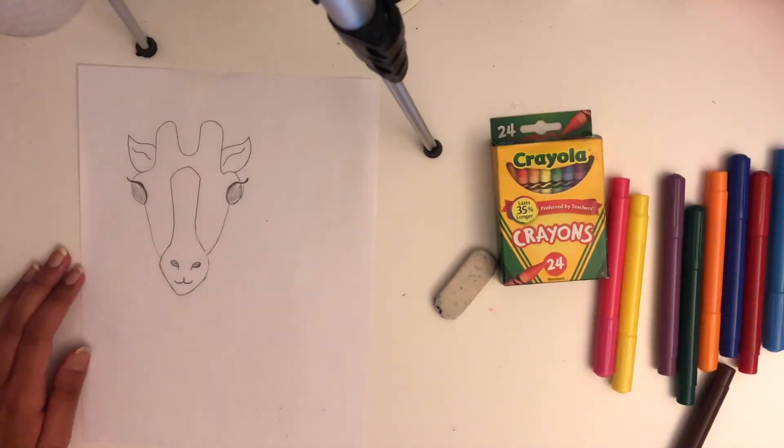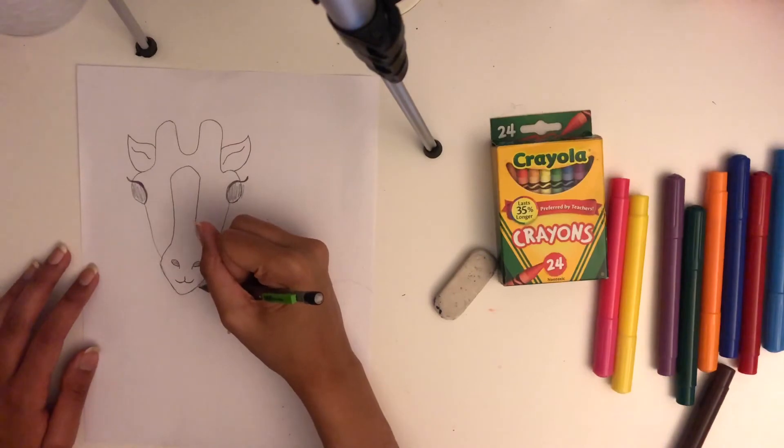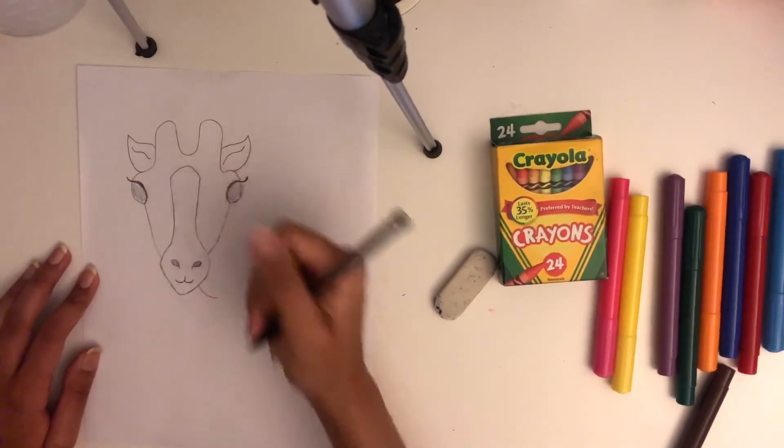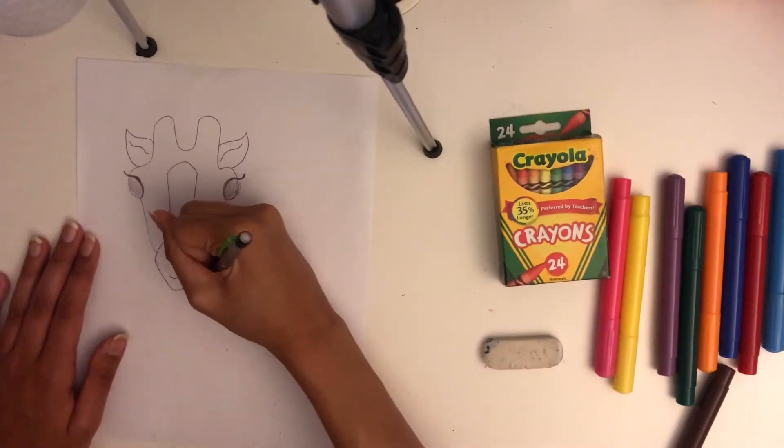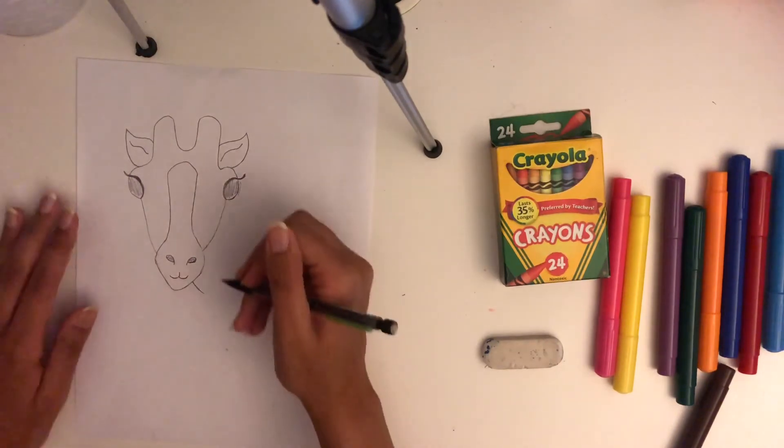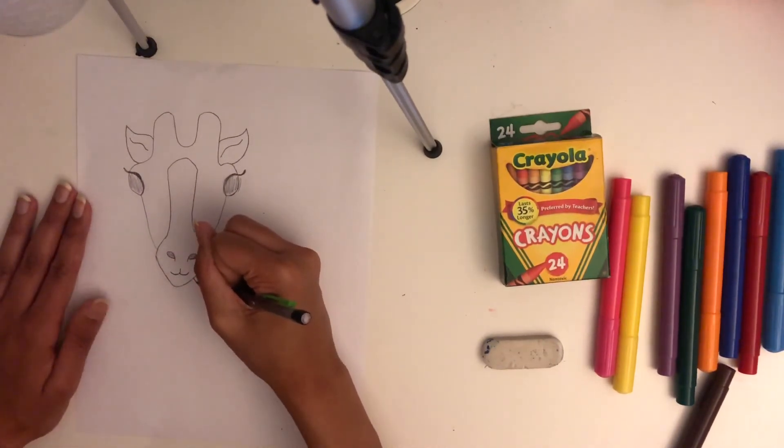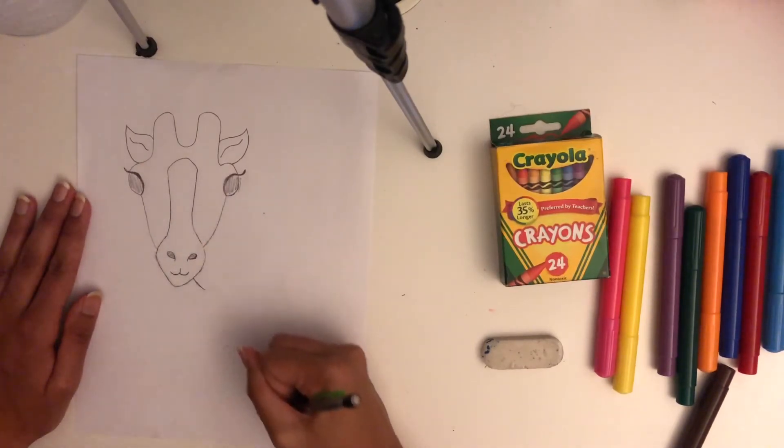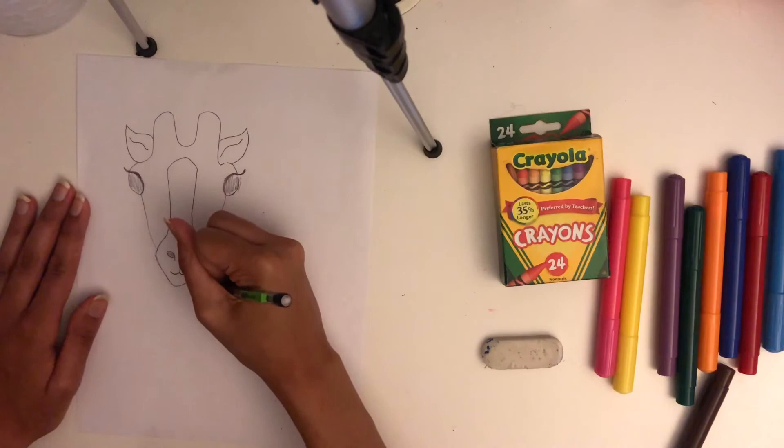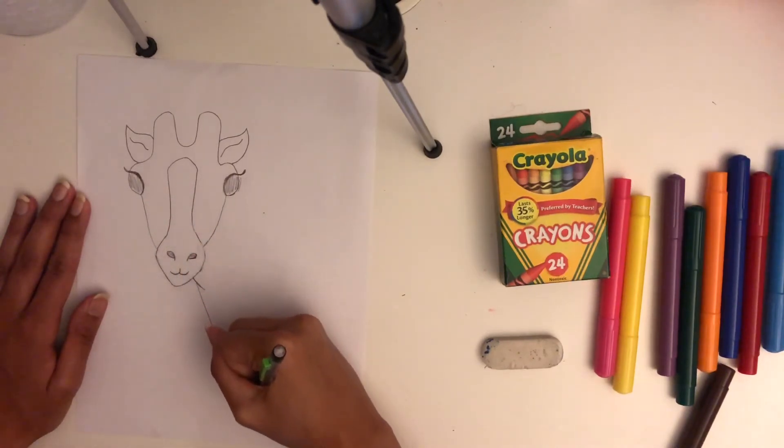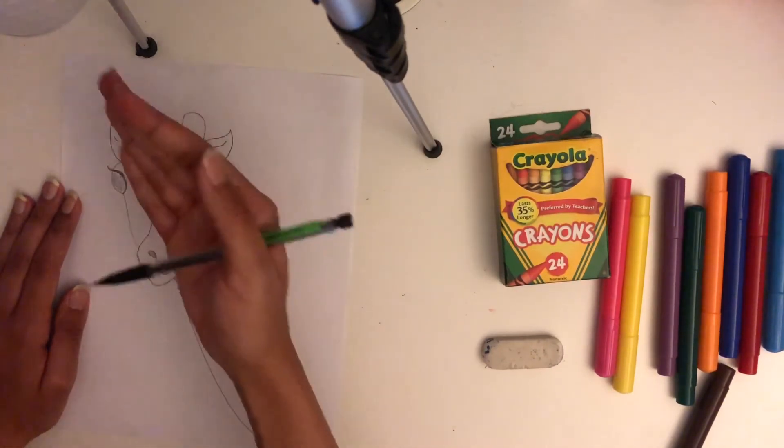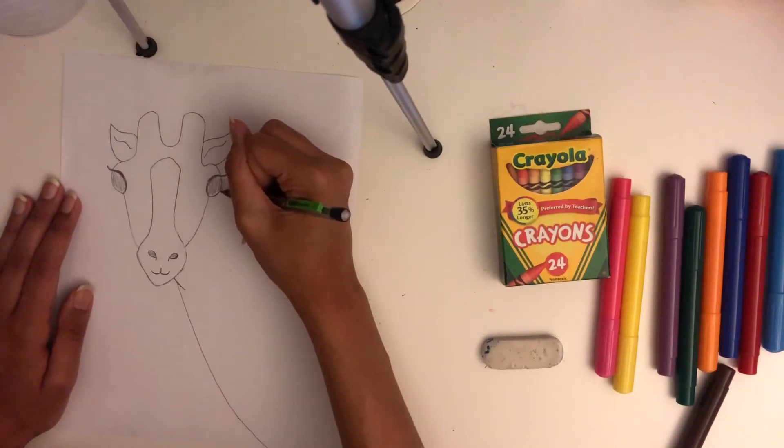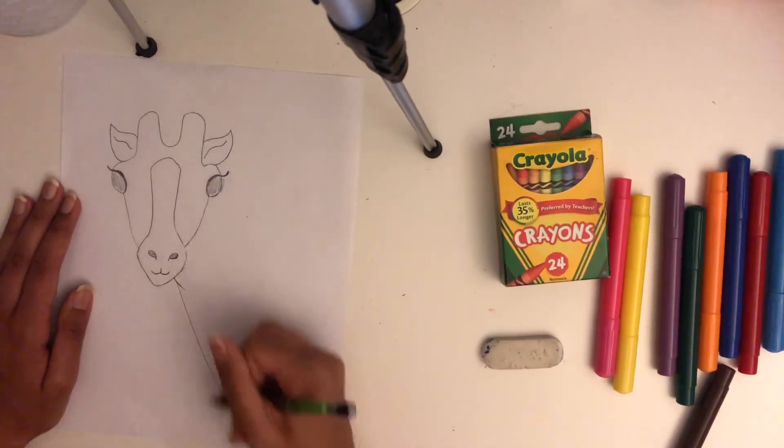Now I'm going to draw the giraffe's very long neck. So starting about here, I'm just going to do a line, a short curved line going inwards. And then about here, I'm going to do a long curved line for the neck, going down towards the edge of the paper. And then starting here, where the eye is, the neck will be coming up from behind. So I'm going to do the same thing, but I'm going to curve parallel to this line.